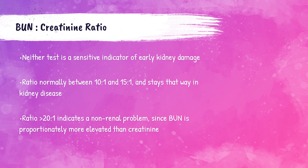Students tend to struggle with this concept. If there is an issue with the kidney, both BUN and creatinine are normally elevated. BUN can be elevated by other things — urinary tract obstructions are post-renal causes, and pre-renal causes would cause BUN to be elevated but not creatinine. So if the ratio is greater than 20:1 — meaning there is 20 times more BUN than creatinine — that indicates a non-renal or non-kidney issue.